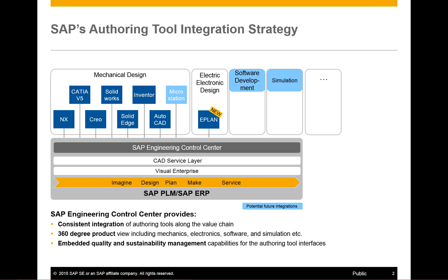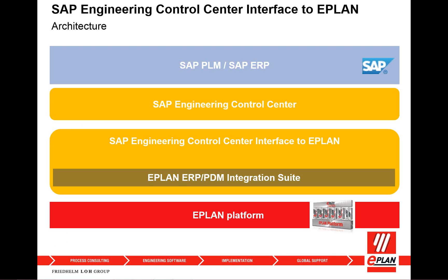Picking up from Alan's slide, we are talking about electrical design done by ePlan directly connected to the SAP Engineering Control Center. Looking at the architecture, we have the backbone — SAP PLM and SAP ERP. As a layer in between, we have the SAP Engineering Control Center, which links all the different disciplines together in one system. Underneath, we have the SAP Engineering Control Center interface to ePlan, which also consists of the ePlan ERP PDM integration suite — our universal connector to connect to PLM. This integration suite covers the complete platform.